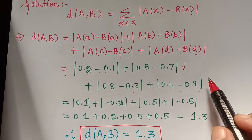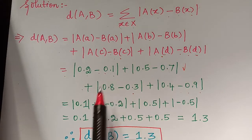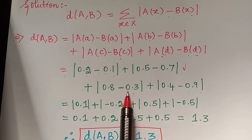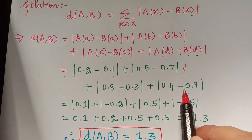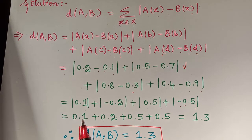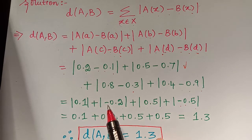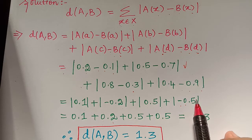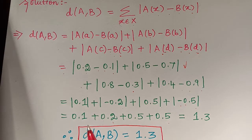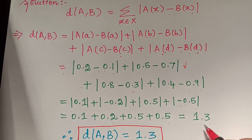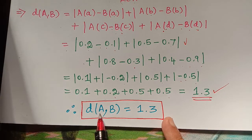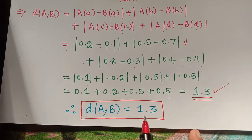Now computing: 0.2 minus 0.1 equals 0.1; 0.5 minus 0.7 equals negative 0.2; 0.8 minus 0.3 equals 0.5; and 0.4 minus 0.9 equals negative 0.5. Taking the modulus of each value gives 0.1, 0.2, 0.5, and 0.5. Adding these up gives 1.3, so the Hamming distance D(A, B) equals 1.3.